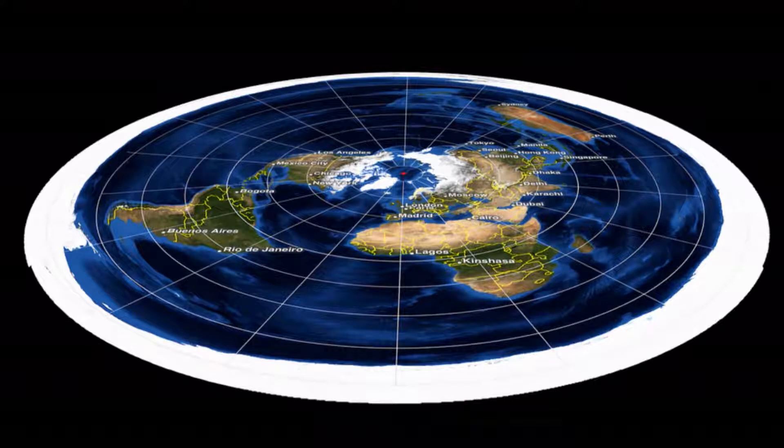That's why flights from south to south do have to go across the equator, but flights north to north never go south of the equator.